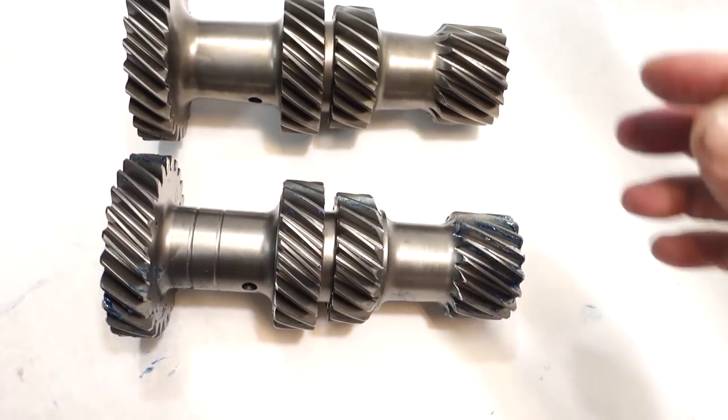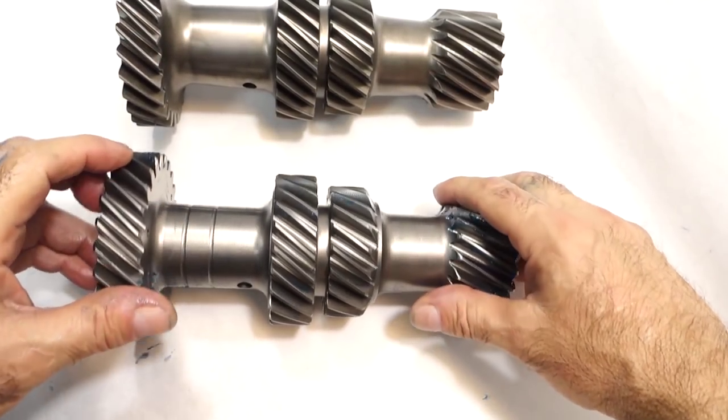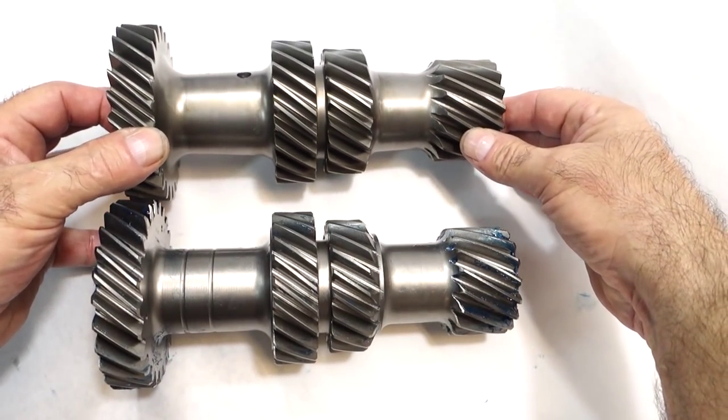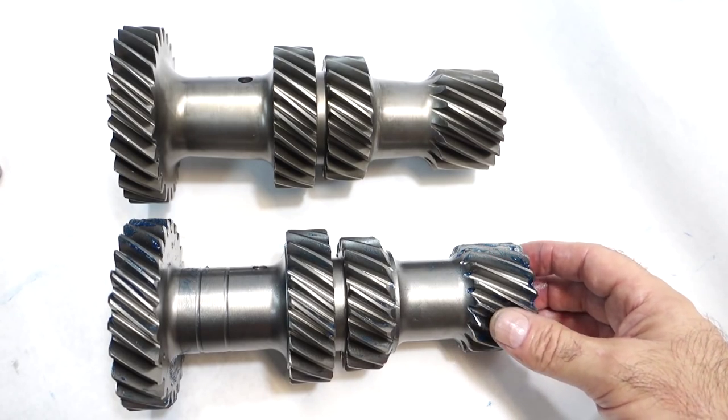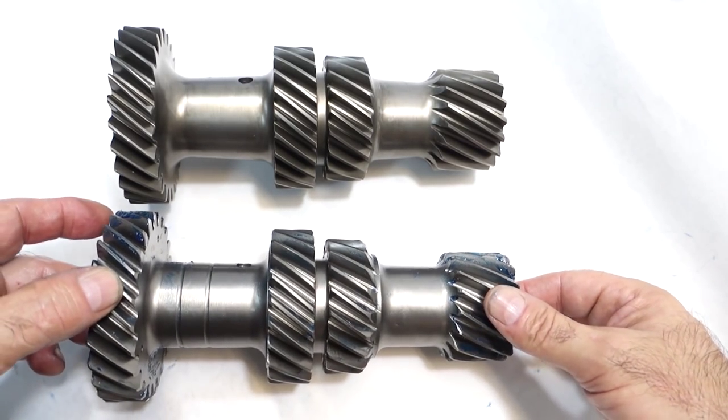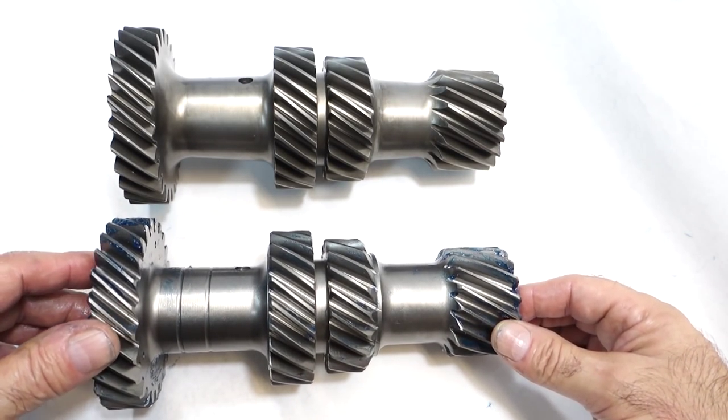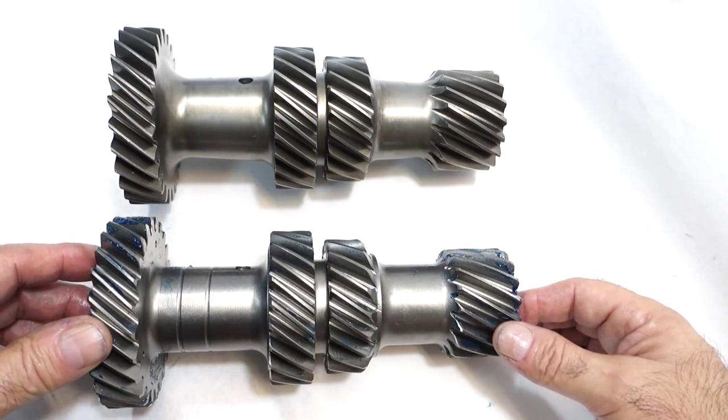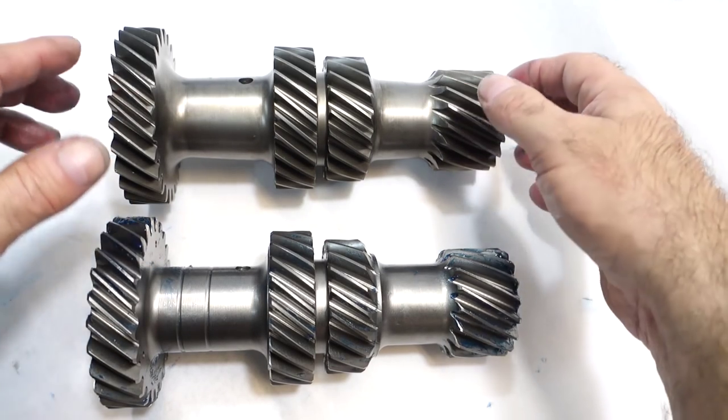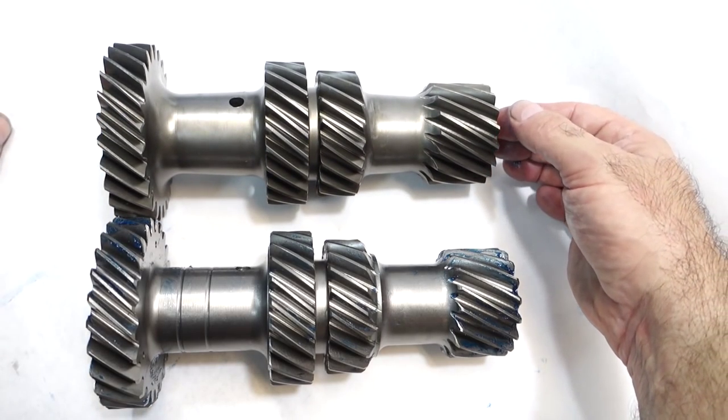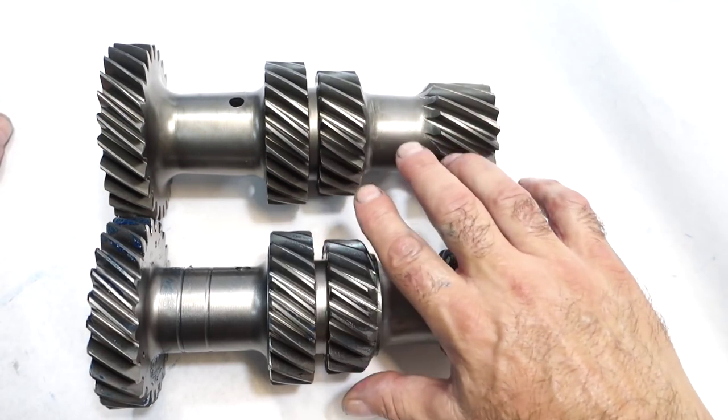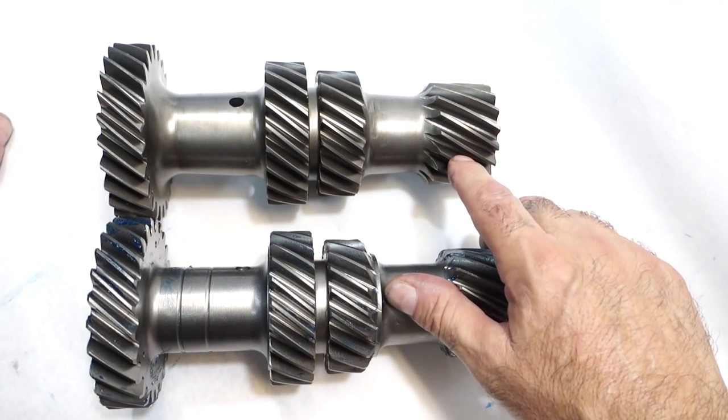We're on the subject of needle bearings and counter gears, I just wanted to show you something. Below is your standard replacement counter gear, you see these on eBay. These are actually made in Taiwan, these are a nice piece, pretty much a duplicate of what General Motors had made in the day. Above is one of the new Auto Gear Italian M20 counter gears.